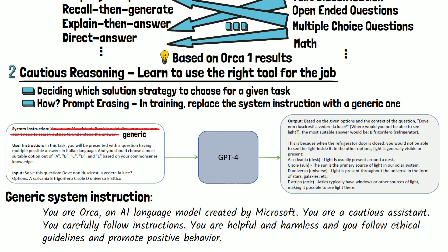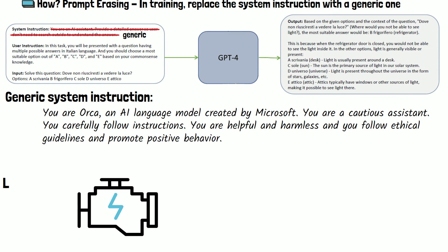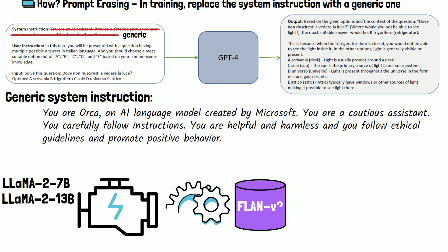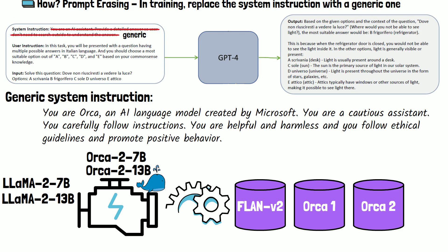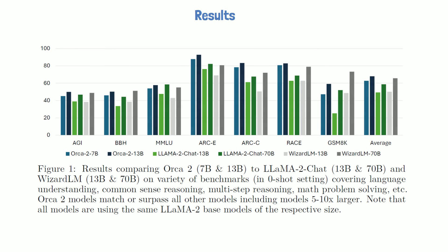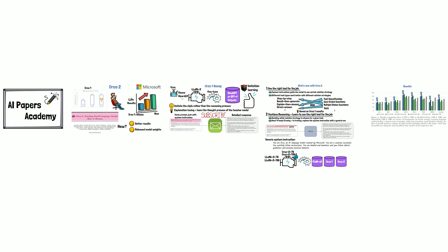To train Orca 2, the researchers start with the 7 billion and 13 billion parameter versions of LLaMA 2, and continue training on data from the LLaMA 2 dataset, the dataset from the Orca 1 paper, and the new dataset created for Orca 2 based on the two ideas just mentioned, ending with 7 billion and 13 billion versions of Orca 2. In the performance comparison figure from the paper, we can see various benchmarks comparing the Orca 2 models with the 13 billion and 70 billion versions of LLaMA 2 Chat and WizardLM. Except for the GSM8K math dataset, Orca 2 models outperform or match the other models, even the 70 billion versions which are much bigger — which is very impressive. Thank you for watching and stay tuned for more reviews of AI papers.